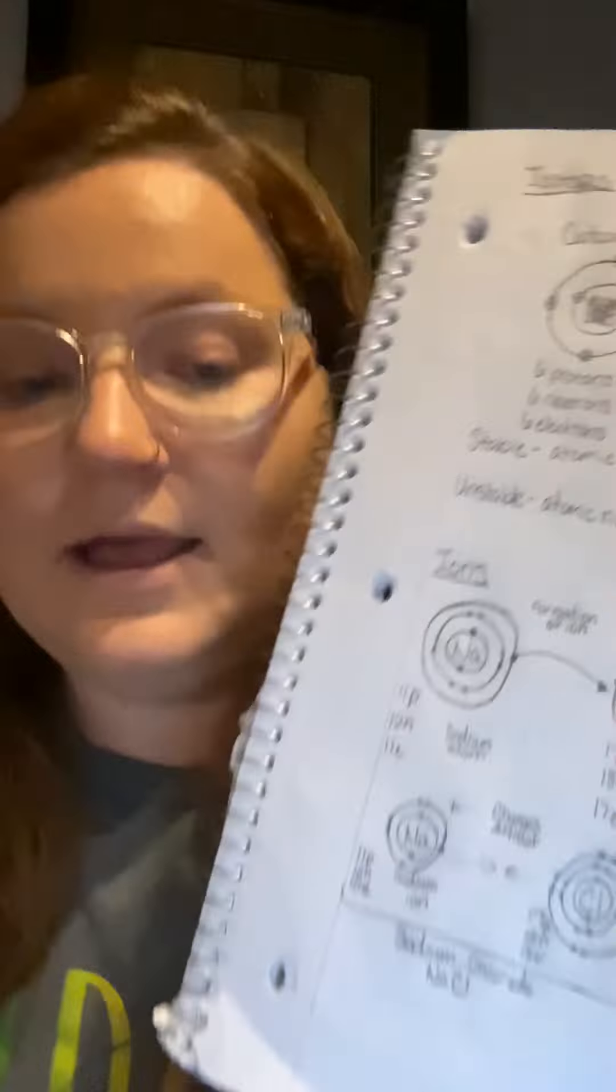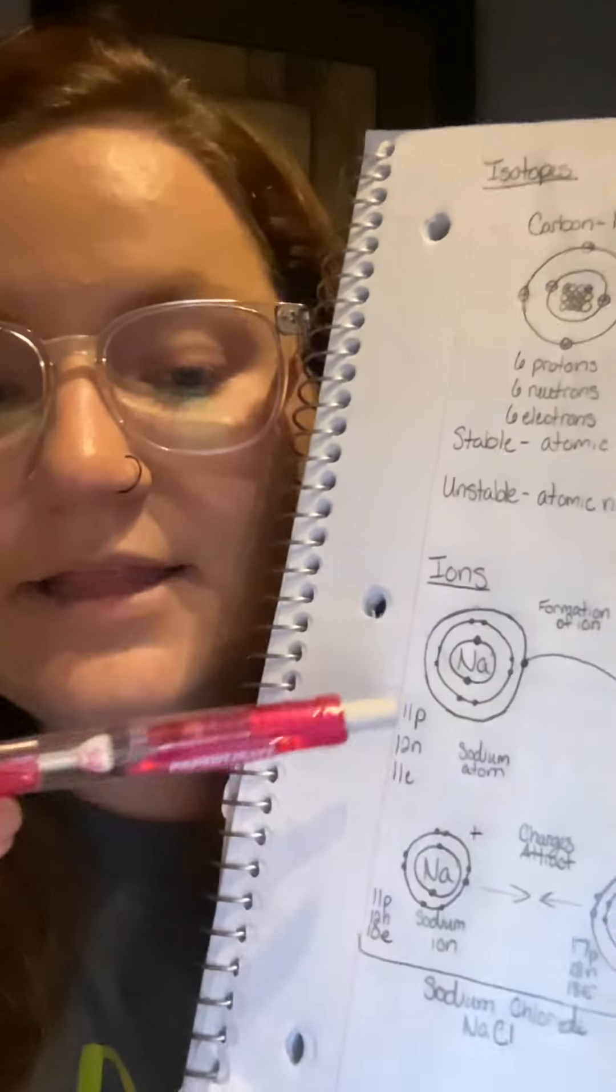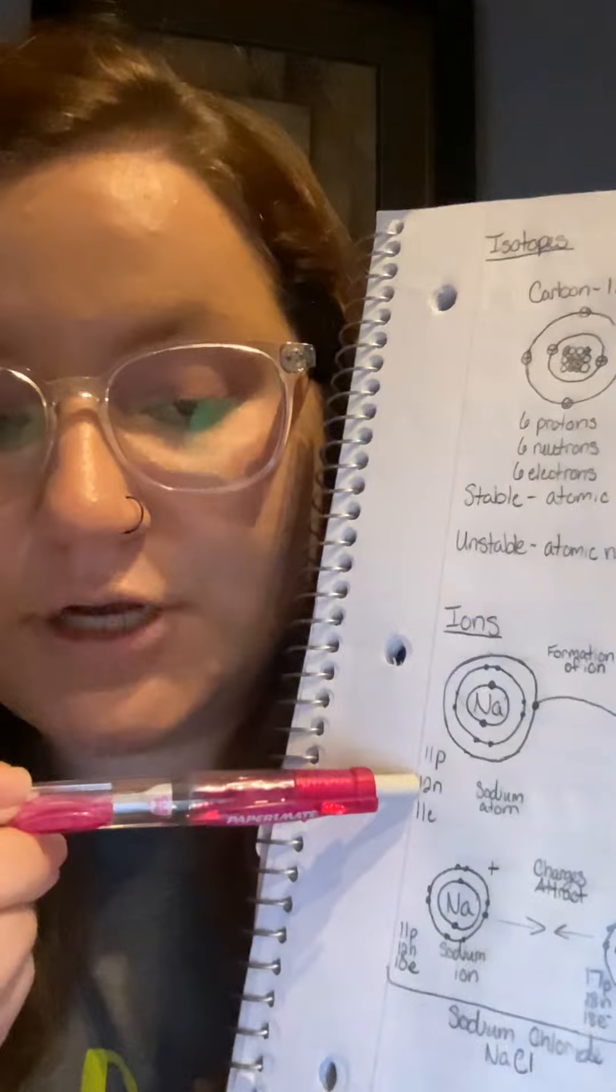Now talking about ions, the best one to use would be sodium and chloride becoming ionic in water. When that happens, a normal sodium atom has 11 protons, 11 electrons, 12 neutrons.